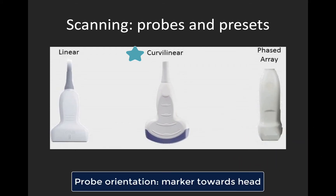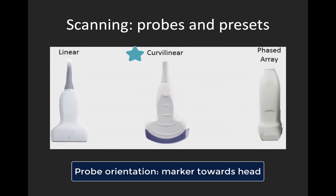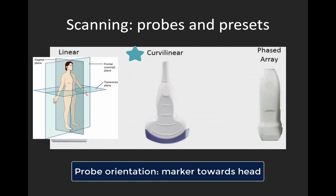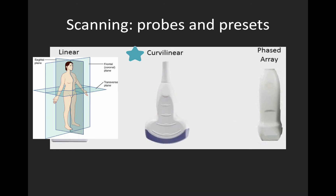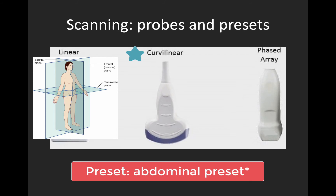In terms of probe orientation, we generally scan with the dot or indicator pointing towards the patient's head, scanning in both the sagittal plane on the anterior chest and the coronal plane on the lateral chest. For presets, we typically scan the lung on the abdominal preset. Some newer machines have a lung preset, but we find these are designed to maximize artifacts like A and B lines while being suboptimal for scanning the lung bases and visualizing solid organs, consolidations, and effusions. So we stick to the abdominal preset.